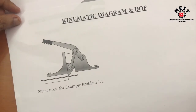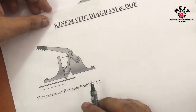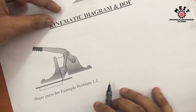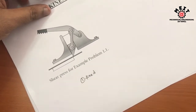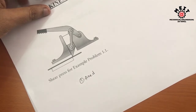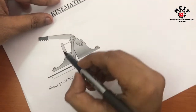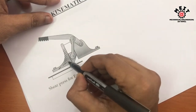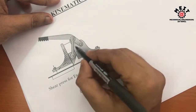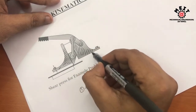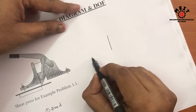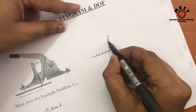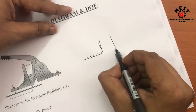The first problem is the shear press. The machine diagram is given and we have to convert it into a kinematic diagram. The first step is always to identify the fixed link — where the particular machine element is fixed. In the shear press, one element is fixed using a nut and bolt joint and another element is also fixed using a bolt joint.